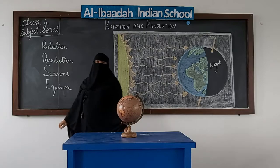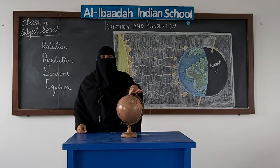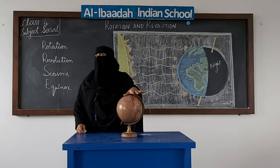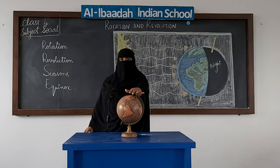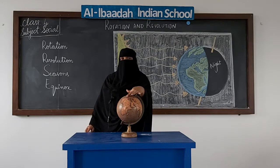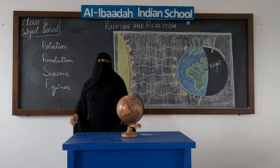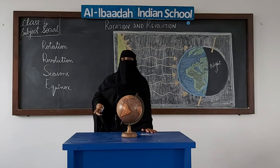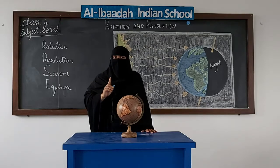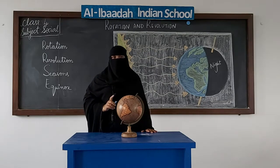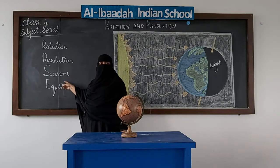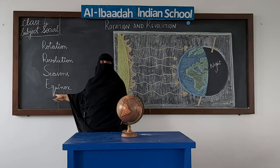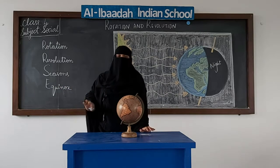Rotation is the movement where the earth rotates on its own axis. The axis is the imaginary line. Because of rotation, we have day and night, and one whole round takes 24 hours. Revolution is the movement in which the earth revolves around the sun, which takes 365 days or one year. Seasons are formed because of the revolution. Equinox means all days and nights are equal all over the world.